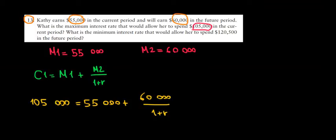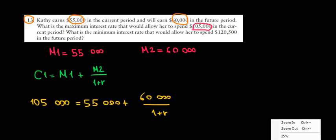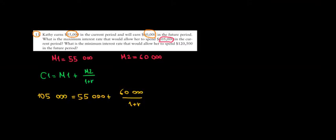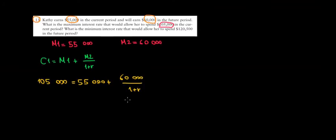So let's make this a bit better. Let me zoom out. So $105,000, we can subtract $55,000. Let's take this $55,000 to the other side. We put it here. So it's going to be $105,000 minus $55,000, which is $50,000, equals to $60,000 discounted at one plus the interest rate.